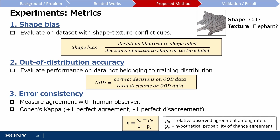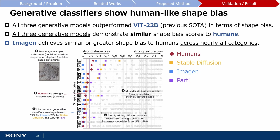The first interesting result is that in contrast to discriminative classifiers that tend to be biased towards texture, generative classifiers appear to display shape bias. All three models outperformed the previous state-of-the-art discriminative classifier in terms of shape bias, achieving scores similar to humans. In the figure below, the x-axis is the degree of shape bias and the y-axis corresponds to different classes. The generative models are aggregated on the left-hand side, with Imagen displaying greater shape bias than humans for some classes.